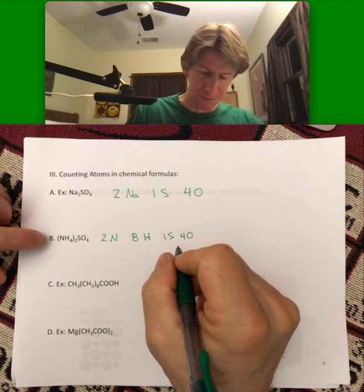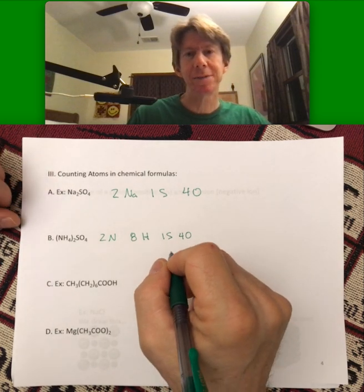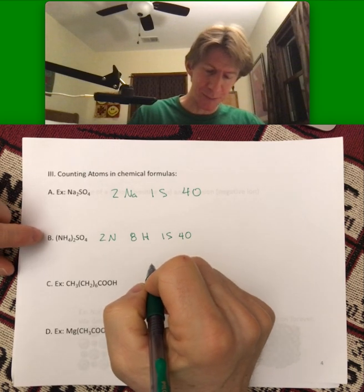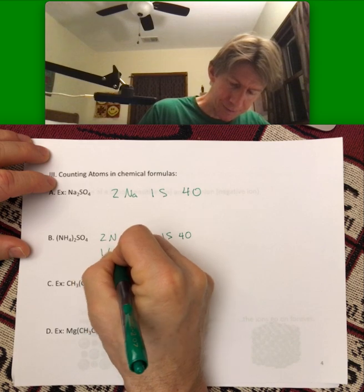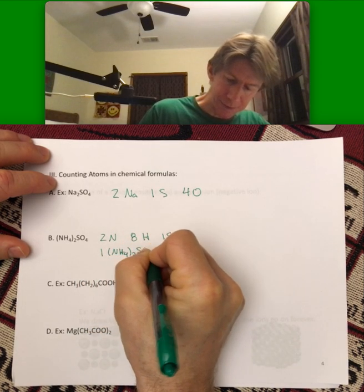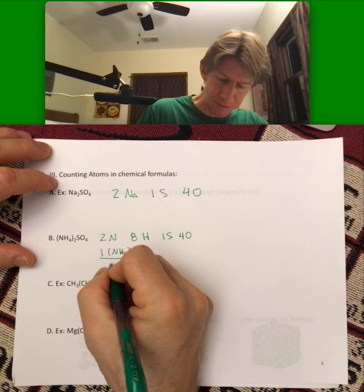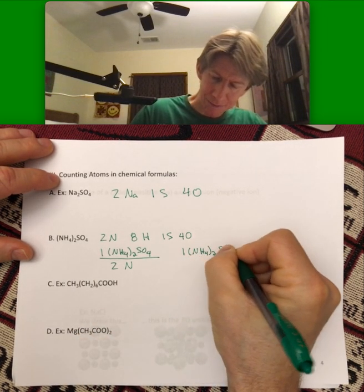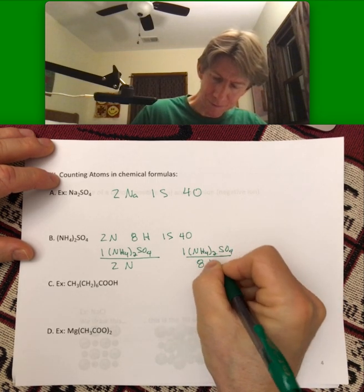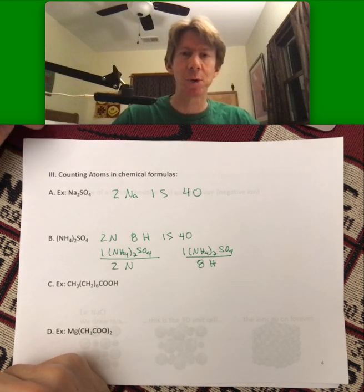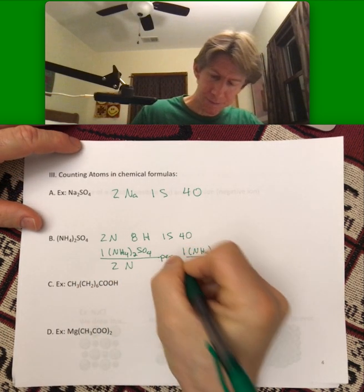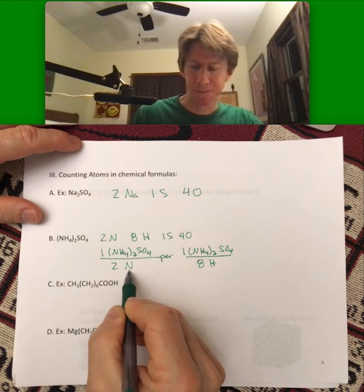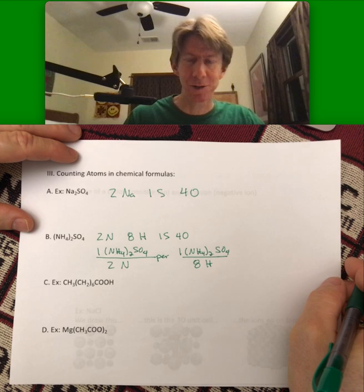And while we're here, we do need sometimes to make unit conversions using these numbers. So for part B, for every one ammonium sulfate, there are two nitrogens. And we can also do any of these, eight hydrogens. And remember, division, our word for division is per. So there are one ammonium sulfate per two nitrogens. That's how we would interpret, that's how we would pronounce that unit conversion factor.